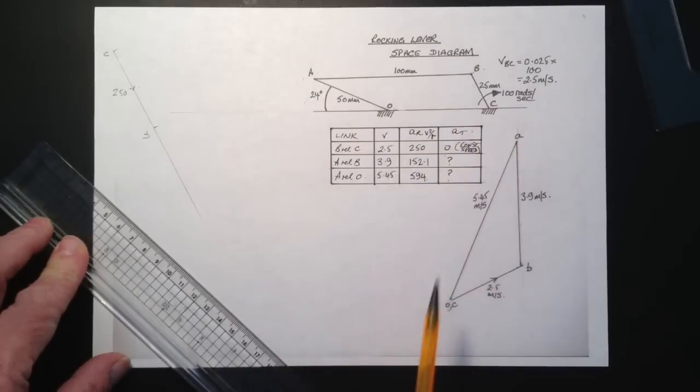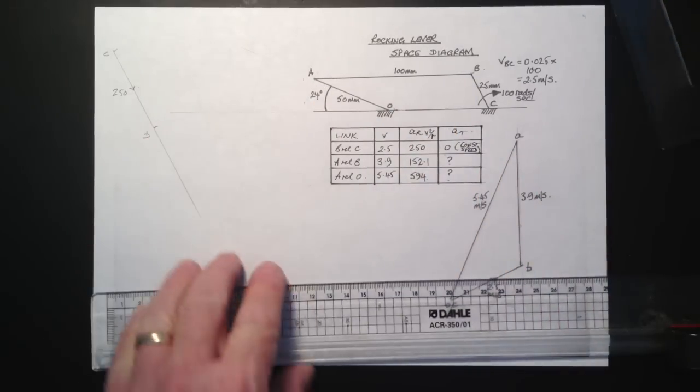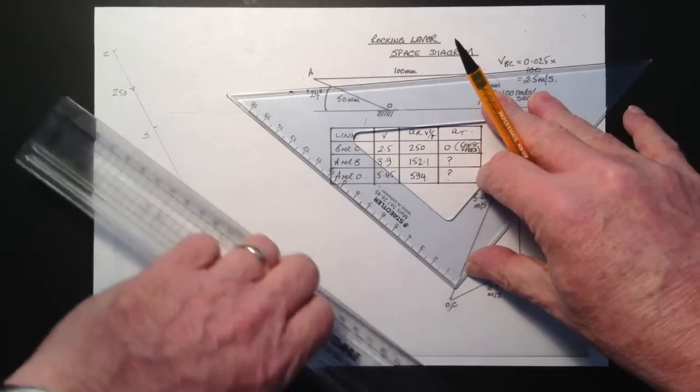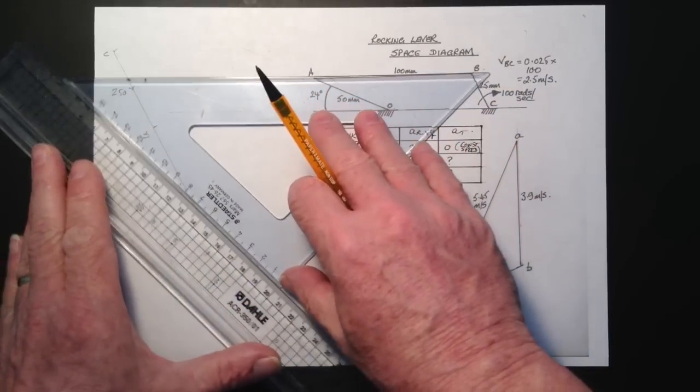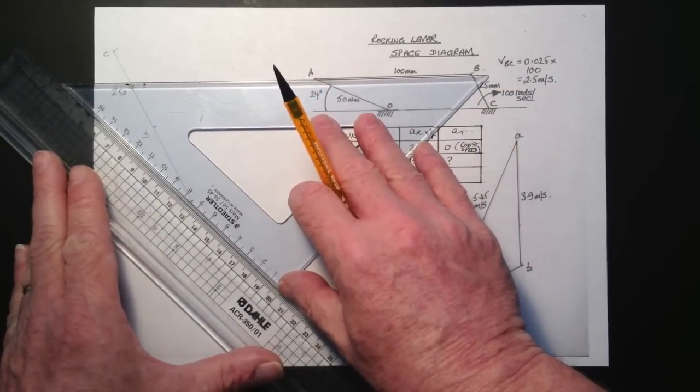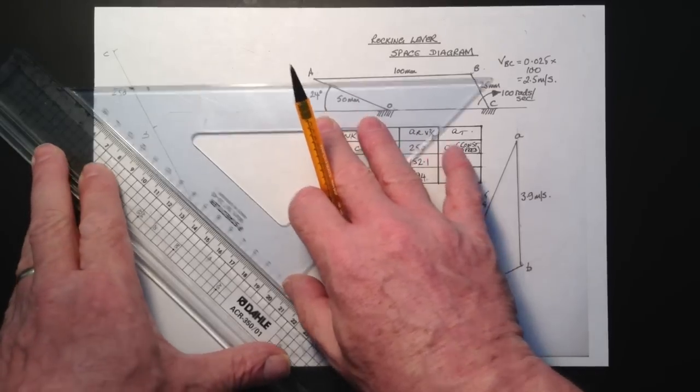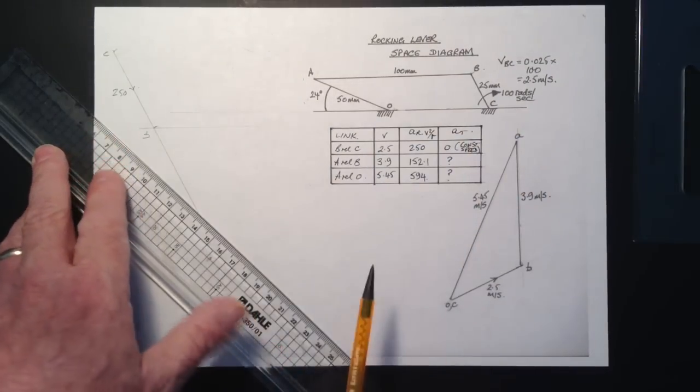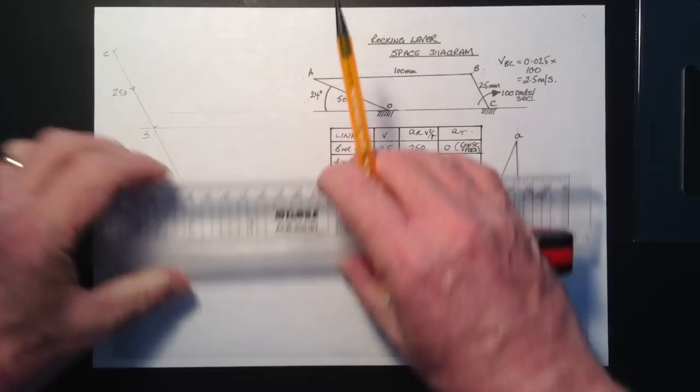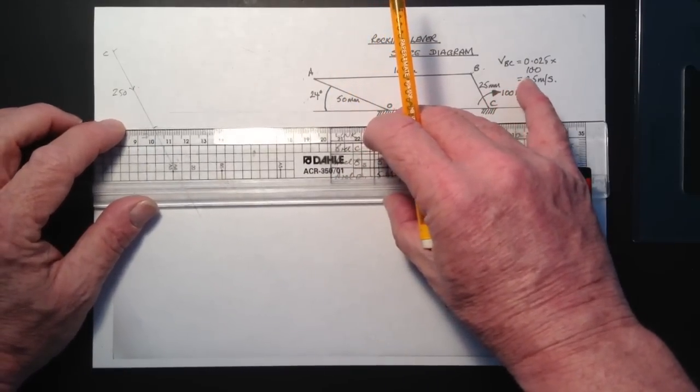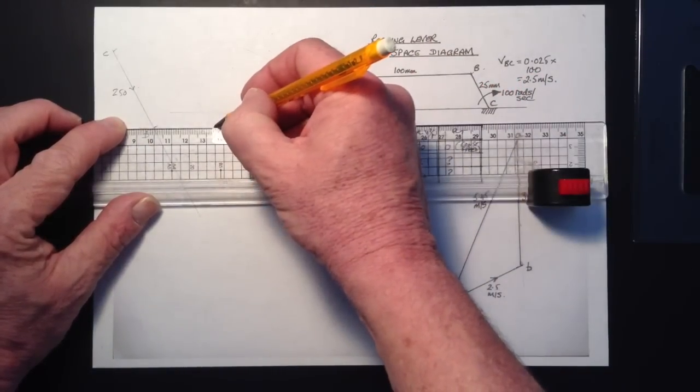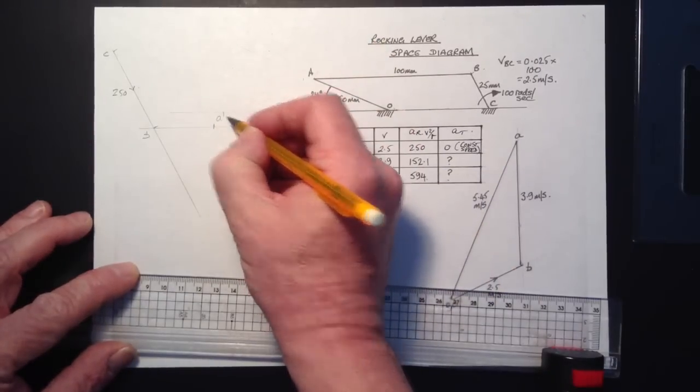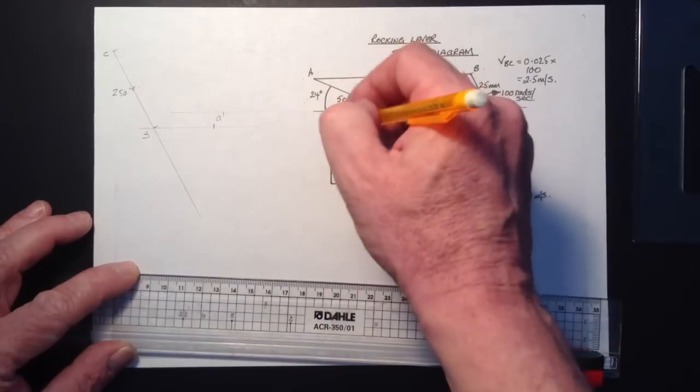Now we can move on to AB. So this is the radial component. We don't at this moment know the size of the tangential component but we do know the radial. So let's just get ourselves positioned so we can get a parallel line AB and it's got to go through point B. So it's going to go from B to A and be parallel to link AB. And again we can scale it from the calculation we did earlier. So let's just get that in. And we can get our first point here. And I'm just going to label this up A dash. It's the radial component of A relative to B.